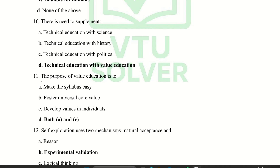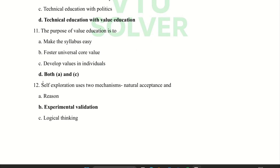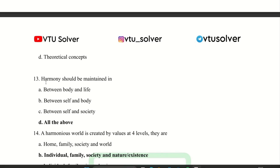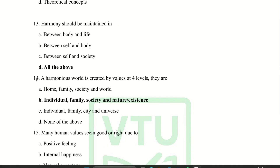The purpose of value education is both A and C — A is to make the syllabus easy and B is to foster universal core values. Next question: self-exploration uses two mechanisms — natural acceptance and experimental validation. Harmony should be maintained in all of the above. The harmony world is created by values at four levels: individual, family, society, and nature or existence.